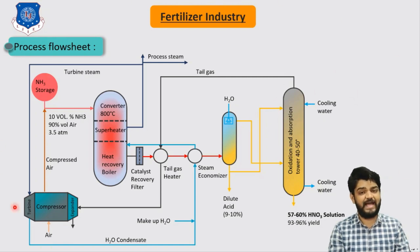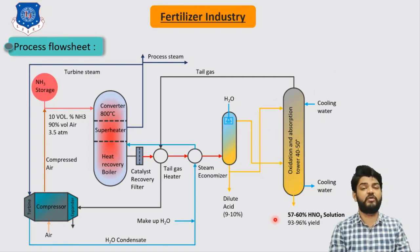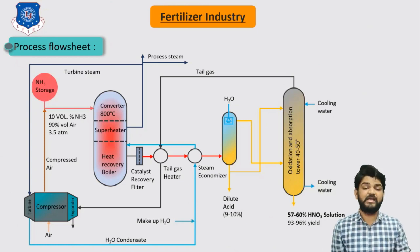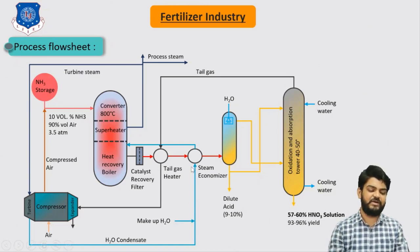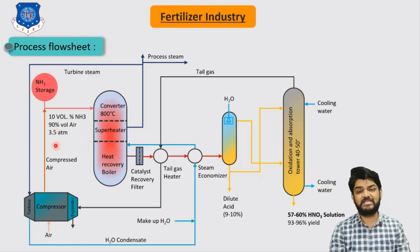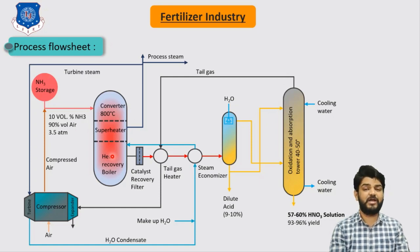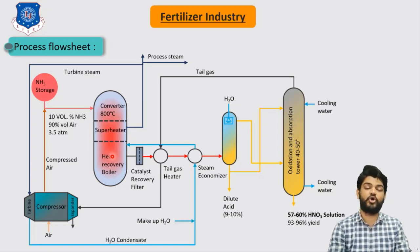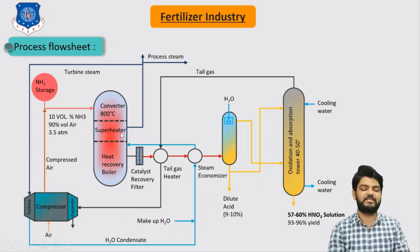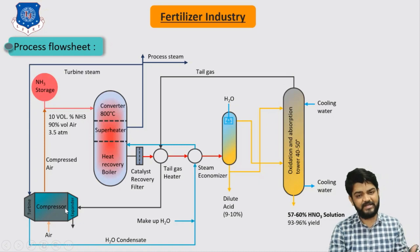Let me quickly revise the entire flow sheet. We start with ammonia, mix it with compressed air, and pass it to the converter. This converter serves different purposes — it is basically a shell-and-tube heat exchanger. Inside the tubes we have packed rhodium and platinum catalyst to enhance the reaction. As this reaction is very exothermic, on the shell side we pass water which is converted into steam. That steam is sent to the turbine section to rotate our compressor.